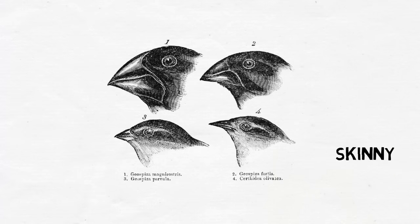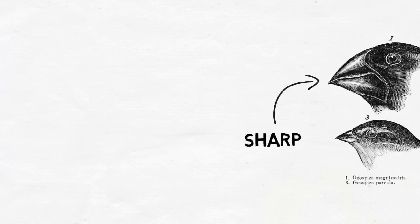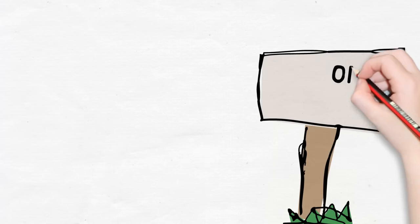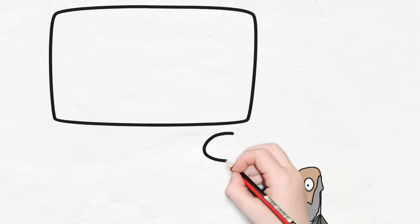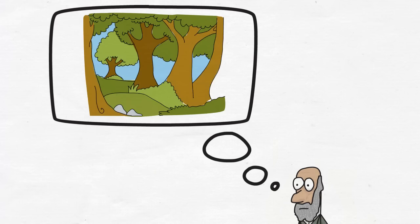The finches who ate insects had skinny, pointed beaks so they could pick them up better. And those that ate hard fruits had beaks that were sharp so they could get through the skin. Darwin decided that there was only one way that this could have happened. The birds must have adapted to their environment over time.